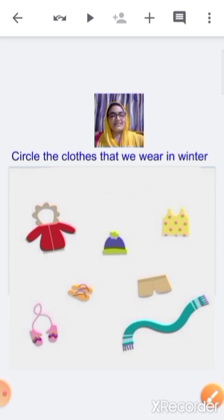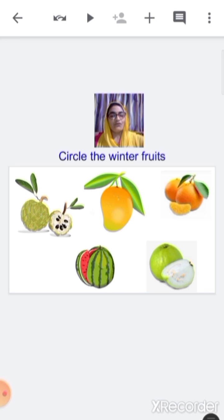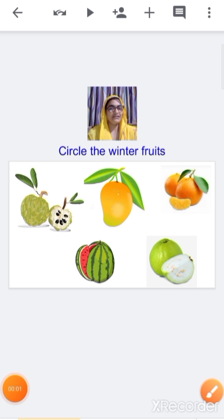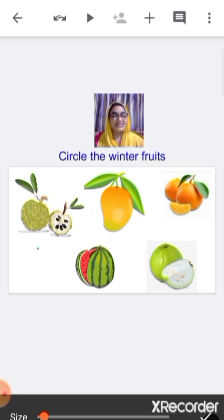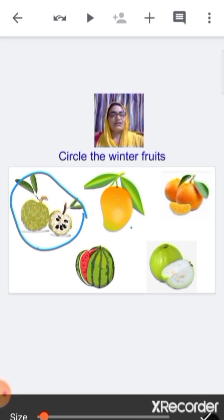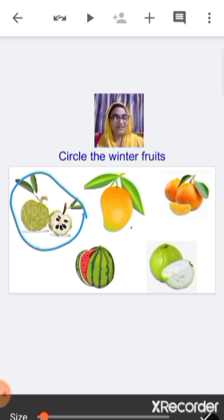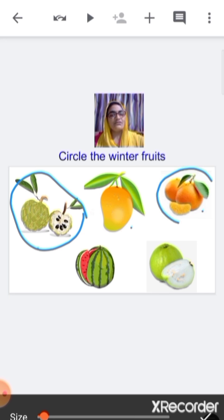Now the next worksheet: circle the winter fruits — the fruits we get during winter season. This is custard apple — do we get custard apple during winter season? Yes, so we are going to circle it. This is mango — do we get mango in winter season? No, so we are not going to circle it. This is orange — do we get orange in winter season? Yes, so we are going to circle it.